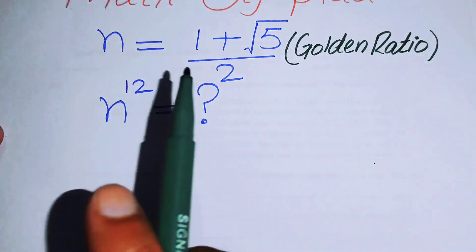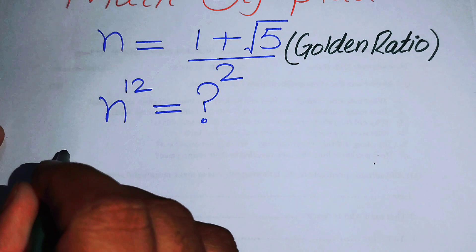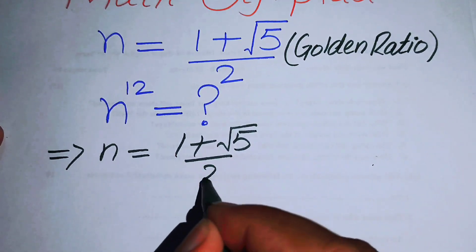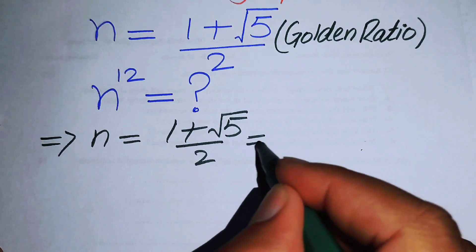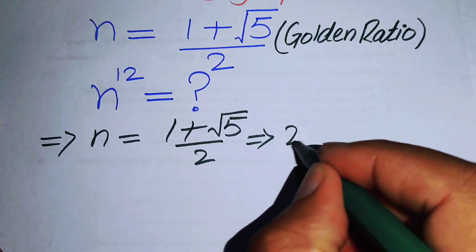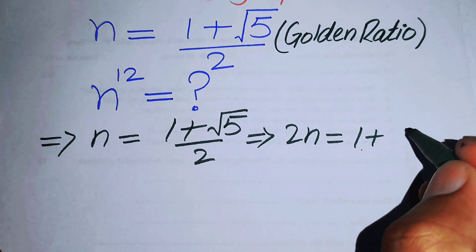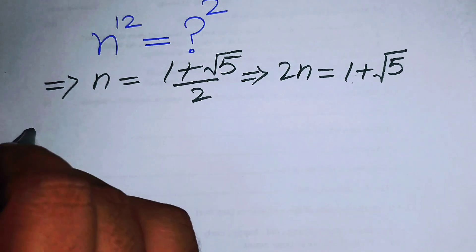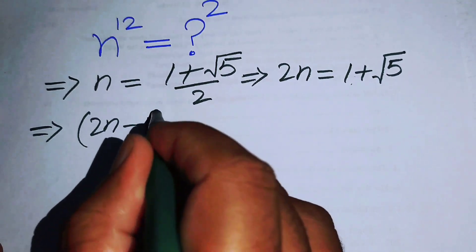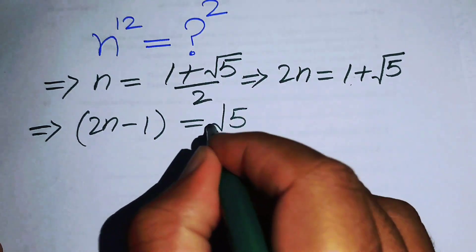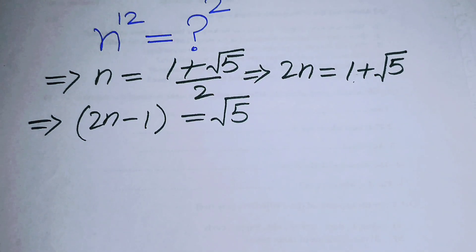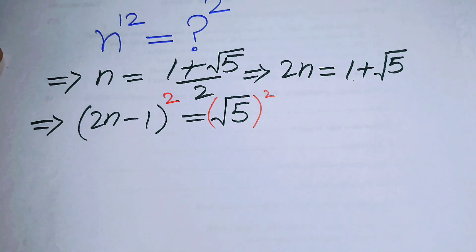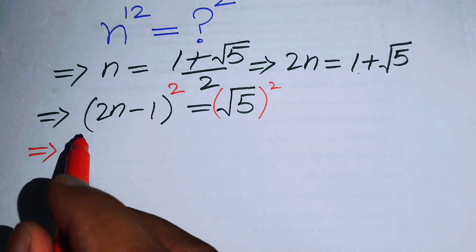The very first thing we are going to do is simplify this golden ratio. We have n equals 1 plus square root 5 over 2. Moving the 2 to the right hand side gives 2n equals 1 plus square root of 5. Moving the 1 to the left hand side gives 2n minus 1 equals square root of 5. Now we take the square on both sides.